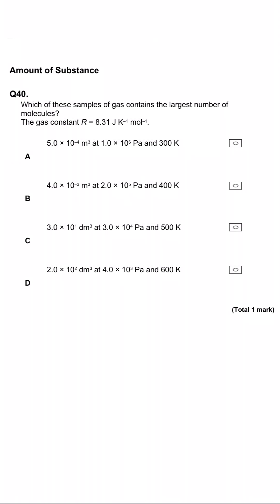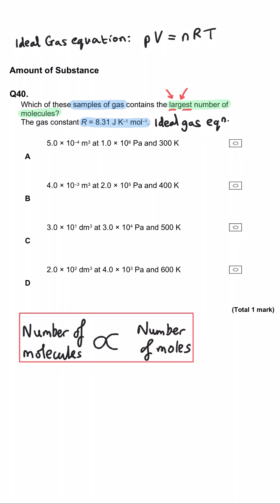Here we're being asked which of these samples of gas contains the largest number of molecules. And they've given us the gas constant, which is the signpost that we're using the ideal gas equation PV equals NRT. Now we need the number of molecules, which is obviously going to be proportional to the number of moles. So we need to have N equals PV divided by RT.